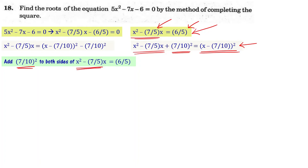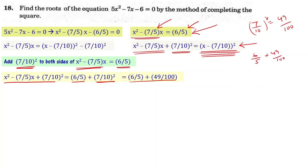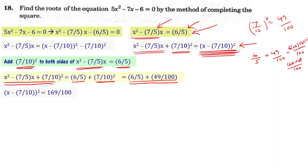Adding (7/10)² = 49/100 to both sides: (x - 7/10)² = 6/5 + 49/100. Converting 6/5 to hundredths: 6 × 20 = 120, so 120/100 + 49/100 = 169/100. Therefore, (x - 7/10)² = 169/100.